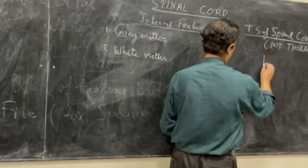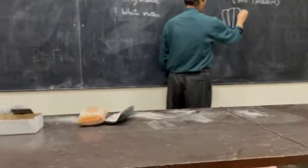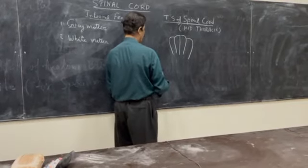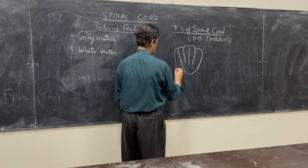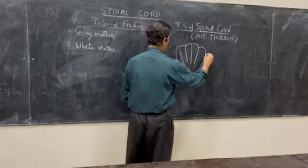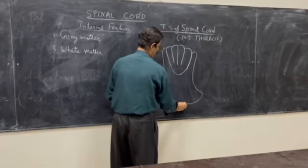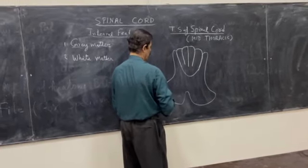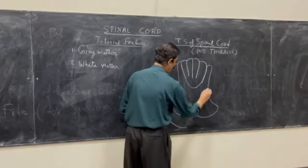When we cut the transverse section of the spinal cord, we see that gray matter lies inside and the white matter lies outside the gray matter. The gray matter resembles, alphabetically, an H-shaped structure.